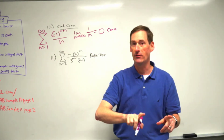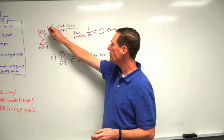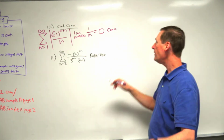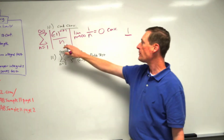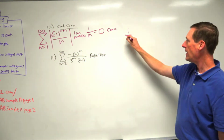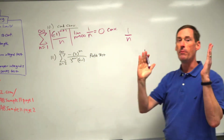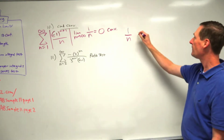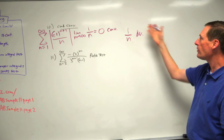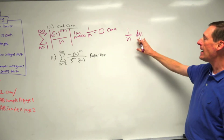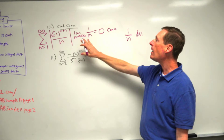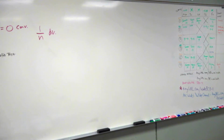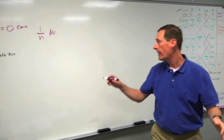This series is convergent, but it's conditionally convergent. When you put the absolute value bars around it, the absolute value of the oscillator is one, so with bars around it the series turns into one over n, which is a known divergent series. With bars on it, it diverges; all by itself, it converges — that is conditionally convergent.